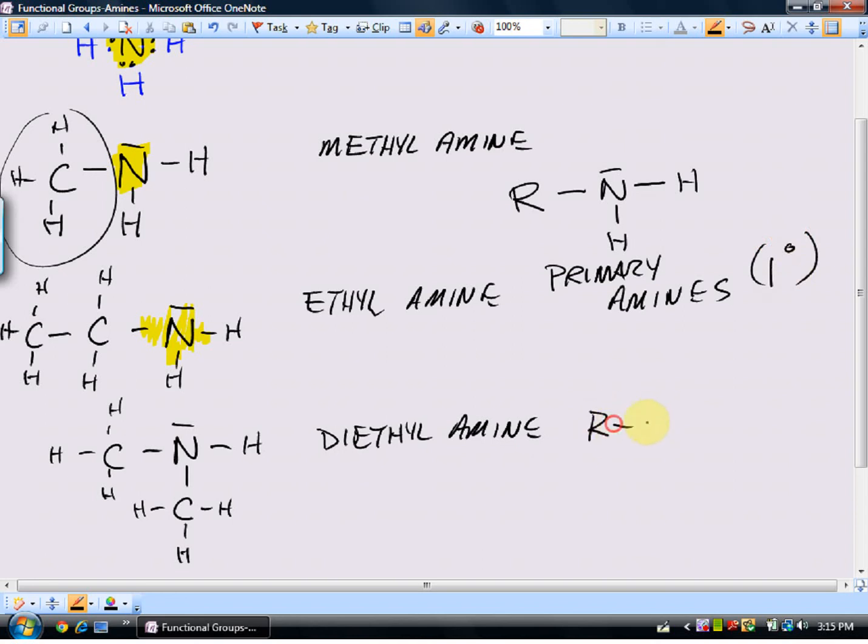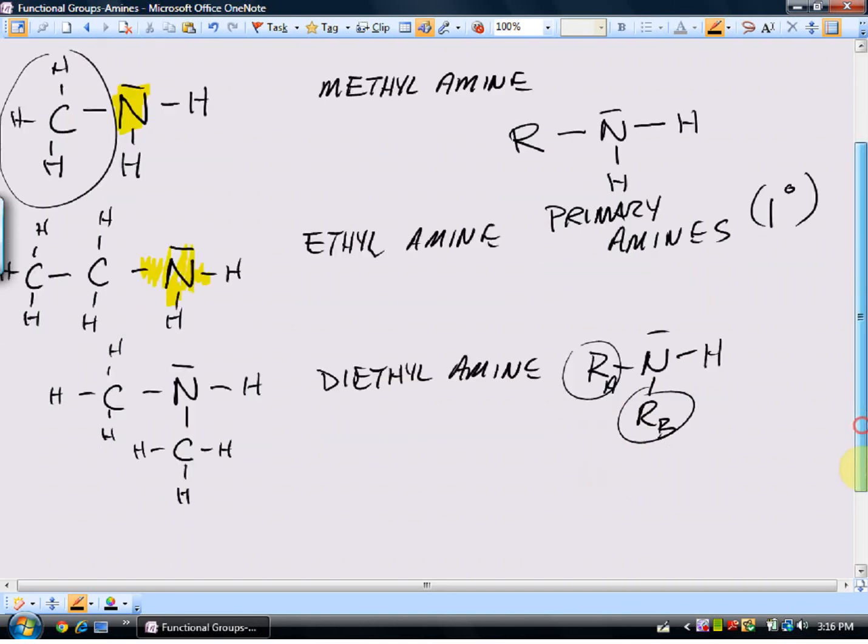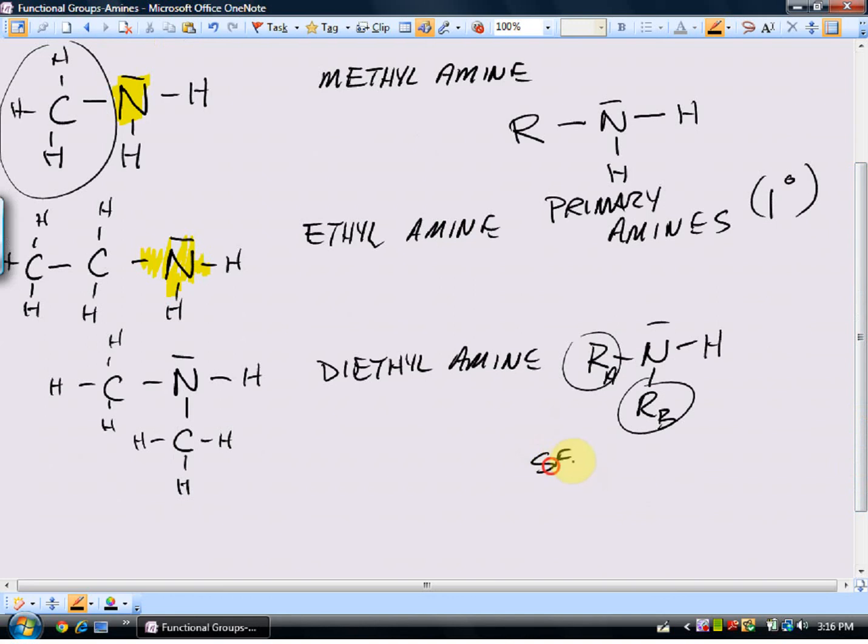You've probably already discovered what we call these. These are structures that have a general formula like this, where there are two carbon groups attached to the central nitrogen, and we call those, you guessed it, secondary amines. And we use the designation, that, as an abbreviation. So secondary amines have two carbon groups attached.